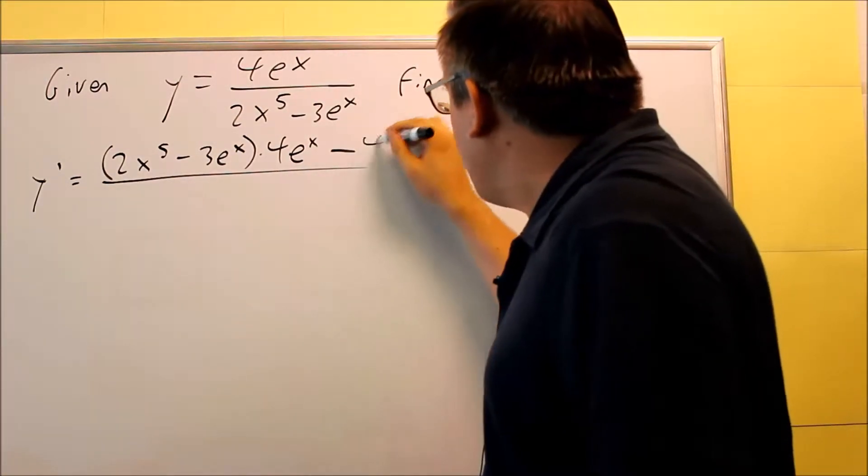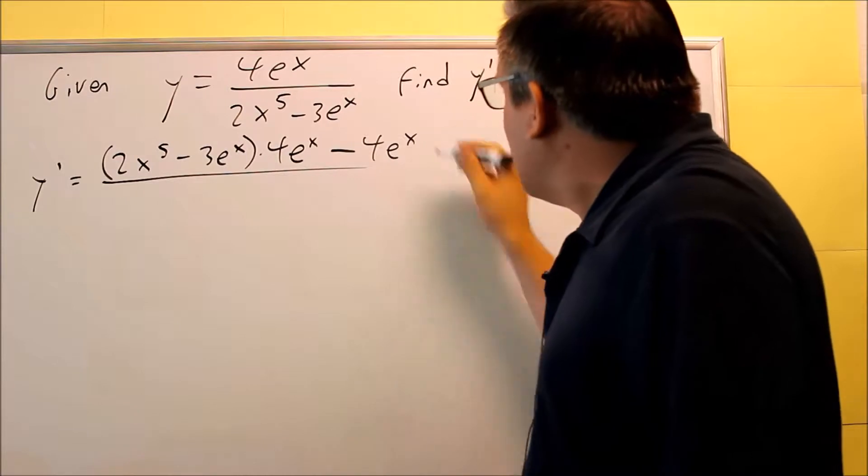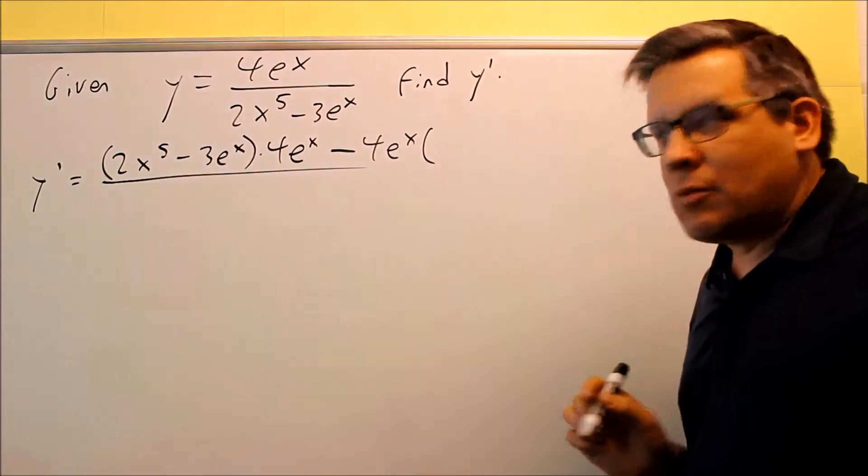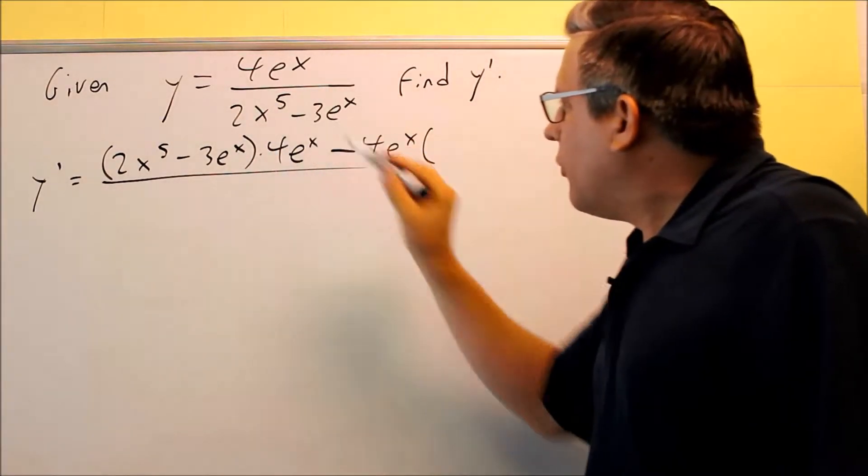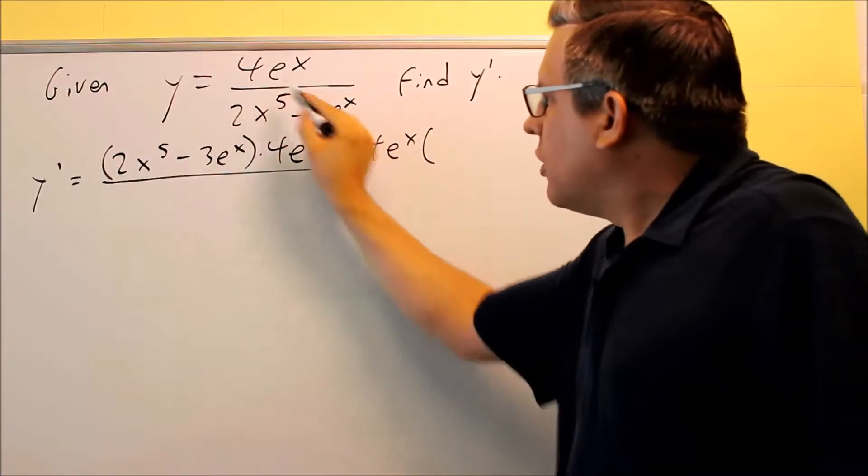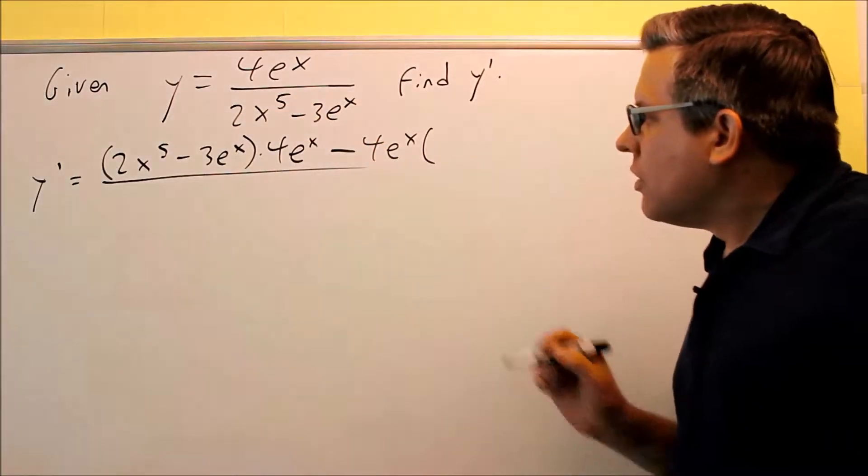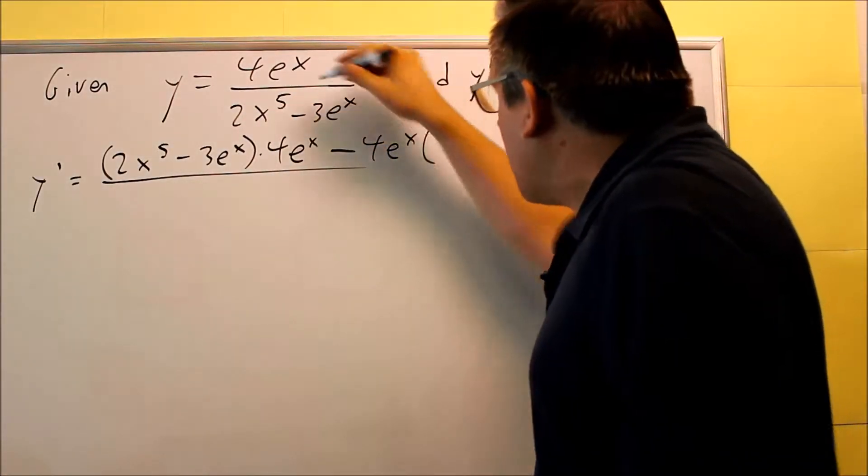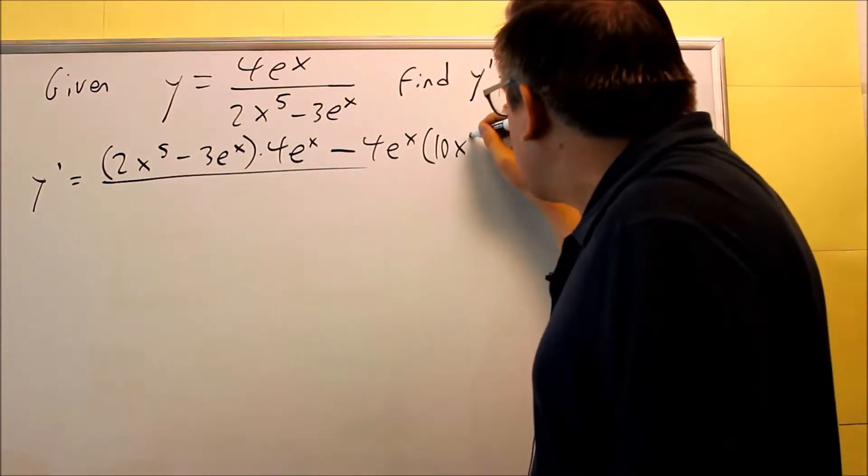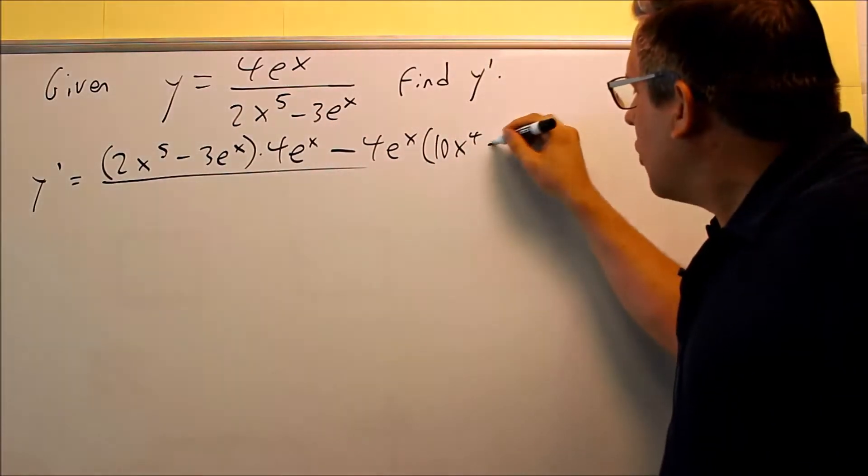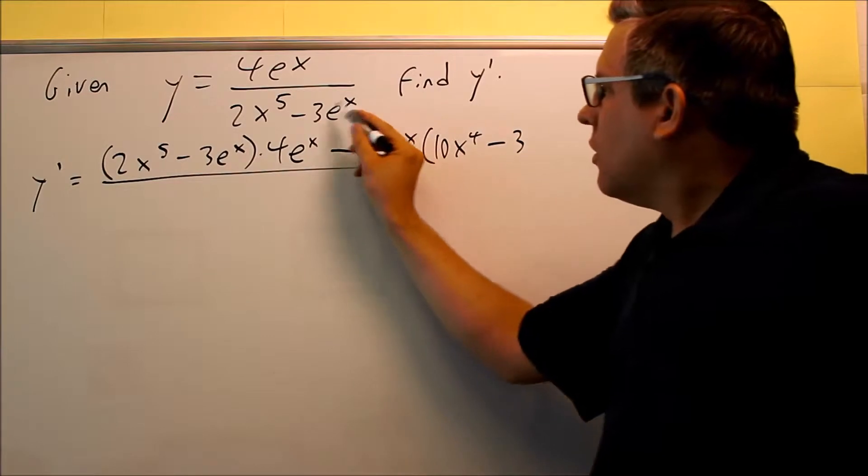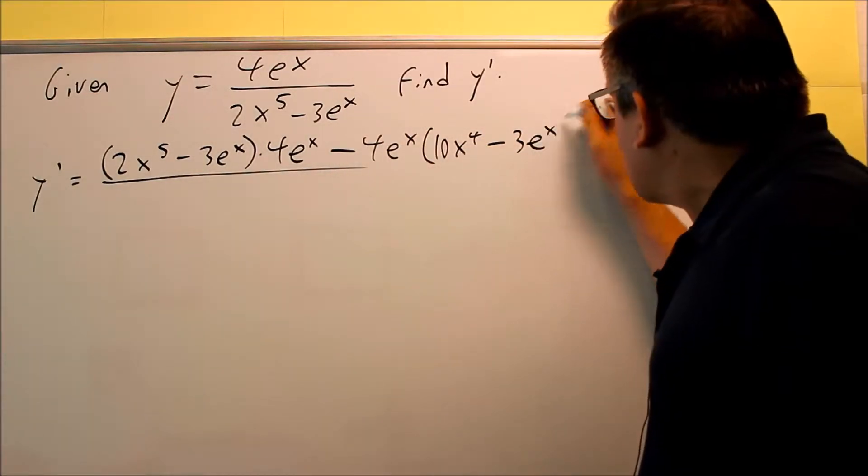Then you have minus the top, 4e to the x, times the derivative of the bottom. So we want to do the derivative of this one here. The first one, that involves a power rule. So 5 comes down, multiplies by the 2. So 10x to the fourth. For this one, we have a minus 3 and then derivative of the e to the x is e to the x.